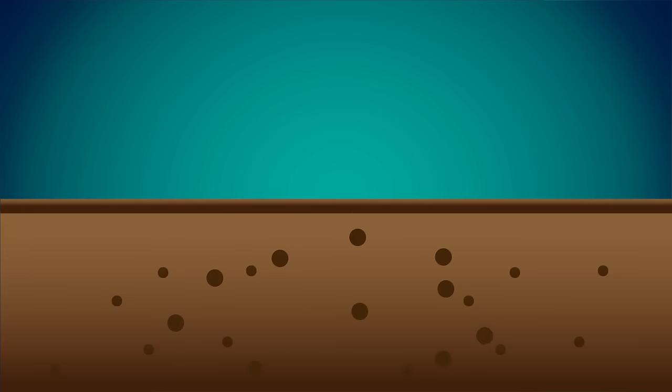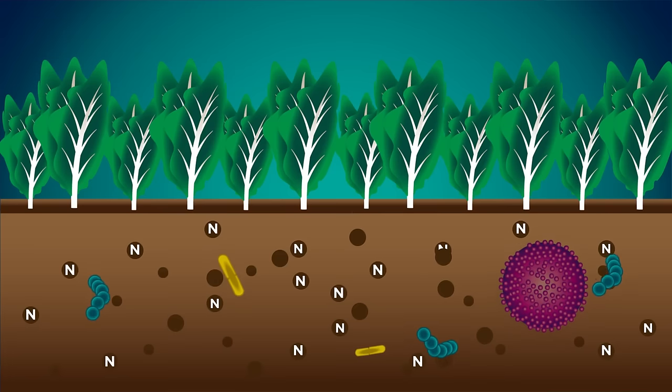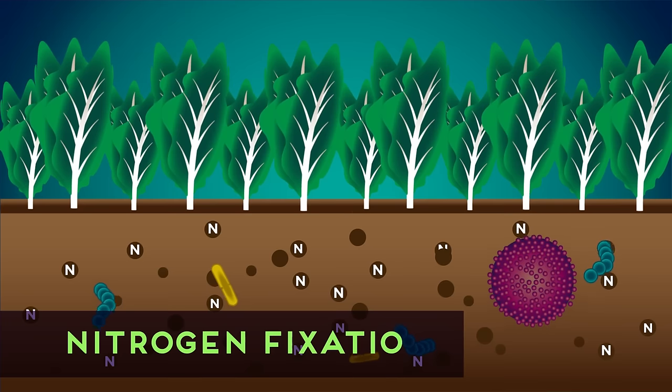Fertile soils. Thank you bacteria. Plants need nitrogen to grow, but how does the nitrogen get into the soil? Of course, the answer is bacteria. They carry out a process called nitrogen fixation.